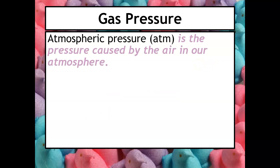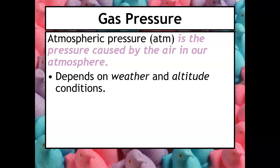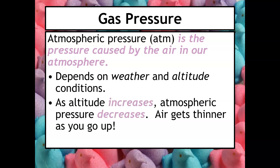Atmospheric pressure is the pressure caused by the air in our atmosphere, and it depends on weather and altitude conditions. As altitude increases, atmospheric pressure decreases — you would know this if you went hiking in Colorado. It gets harder to breathe as you go up mountains because there is less oxygen available. Less oxygen means fewer particles colliding and therefore less pressure.